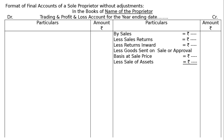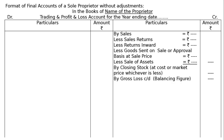Next deduction is 'less sale of assets' — if assets were mistakenly included in sales of goods, they are deducted, with net sales shown in the final column. Then 'by closing stock at cost or market price, whichever is less' — for example, if cost is ₹1 lakh and market price is ₹80,000, then ₹80,000 is shown. If the debit side is higher, the balancing figure is 'by gross loss carried down.'